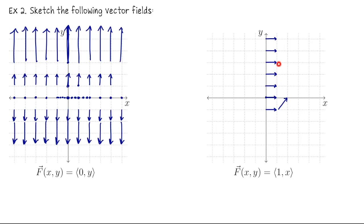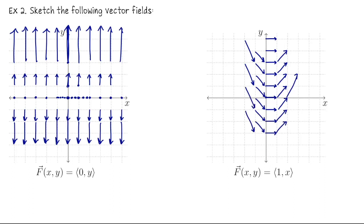We can fill in the rest of the plane to give a sense of motion. Suppose this is modeling a fluid and I drop an object — according to the vectors it's going to go down a bit, then go straight to the right, then turn upward. If I come down further, we flow down, then to the right, and then turn and flow up. This is the sense of motion built into this vector field.